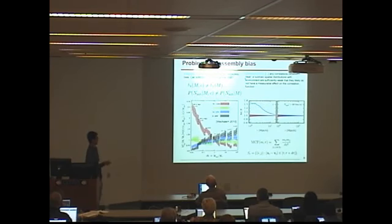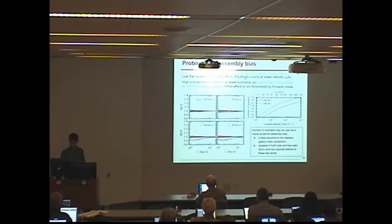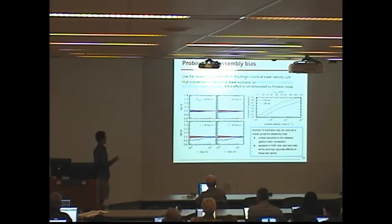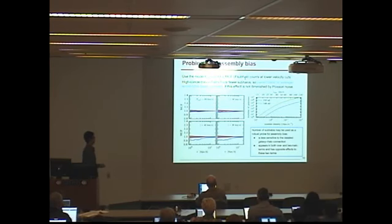Here is an example: there is a signal in concentration, but not in subhalo occupation if you only select subhalos larger than 60 km/s. However, using our model — which has no resolution limitation — you can predict the autocorrelation function down to very small velocities, and then you start to see a signal. There is a negative signal because paired halos are on average more concentrated, so they have fewer subhalos on average. This negative signal appears in the transition region and extends into the one-halo term.